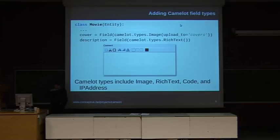When you define your model, you can use specific Camelot field types that extend SQLAlchemy field types to provide additional functionality. For example, the image field type helps you store the location of images in the database, and the rich text field type stores text as HTML in the database but visualizes it to the user as a rich text component.